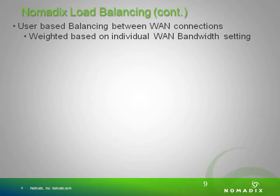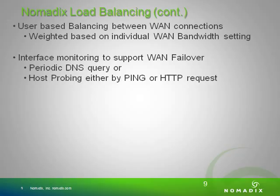We use user-based balancing between the WANs for load balancing. Each user will be assigned a specific WAN interface that all its traffic runs over, and if the link fails, they move to a different WAN. All load balancing is weighted based on the bandwidth settings of the individual WAN interfaces. So if one WAN interface has twice as much bandwidth as another, it will also carry twice as many users, allowing most users to have an even amount of bandwidth and a good user experience.